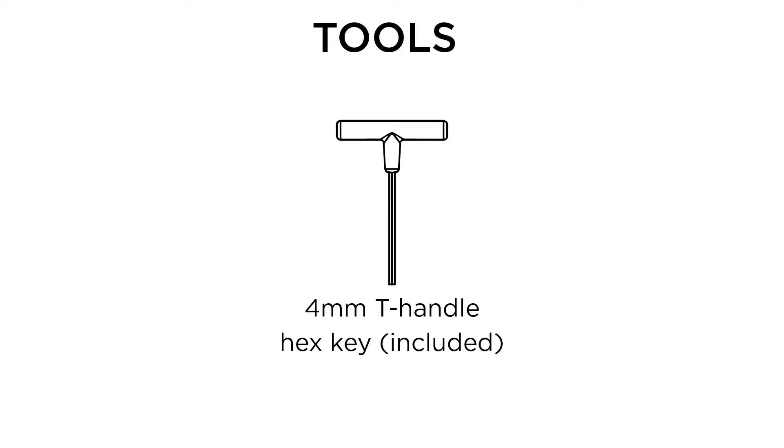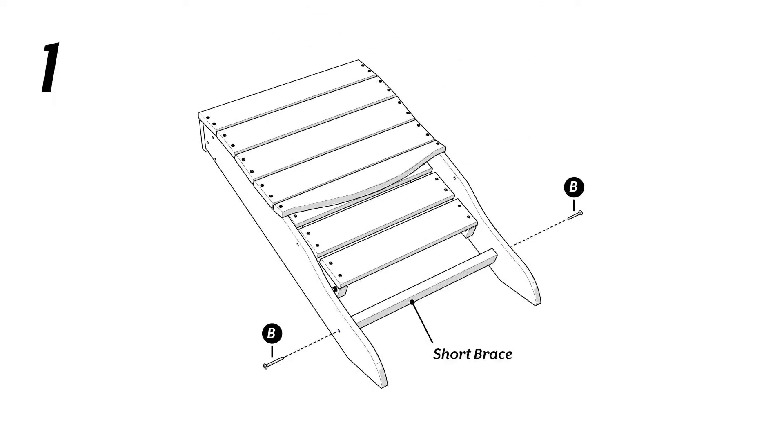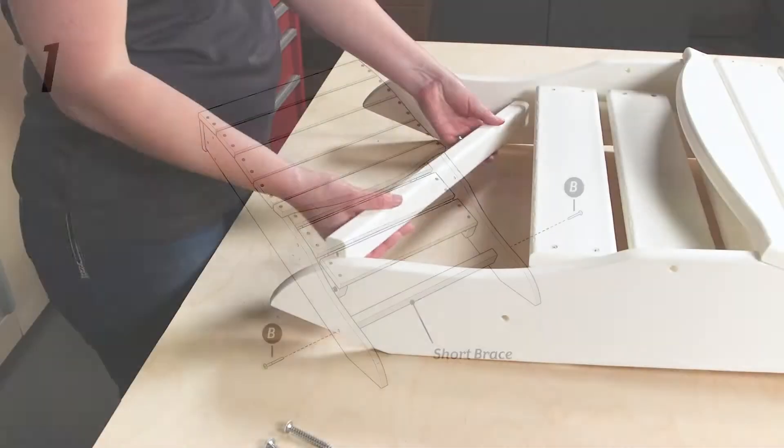For quicker assembly, you can use a drill and a 4mm hex bit in place of the provided 4mm T-handle hex key.